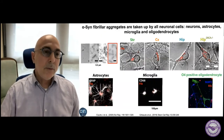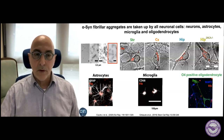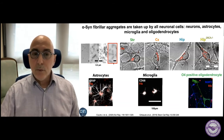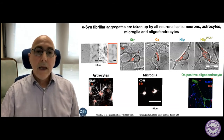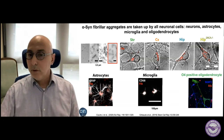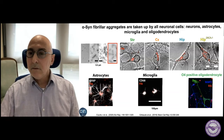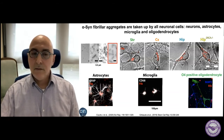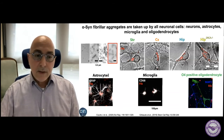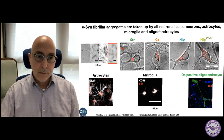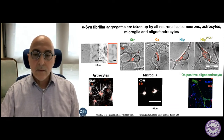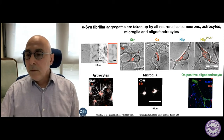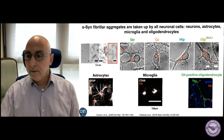We can assemble alpha-synuclein in a test tube into fibrils, visible here in the electron microscope. We can label these fibrils with a dye — red, for example — and add them to neurons grown in culture. The neurons, whether striatal, cortical, or hippocampal, expressing or not alpha-synuclein, bind these fibrils. Other cell types within our brain also bind the fibrils: astrocytes, microglial cells, and — very important for MSA — the oligodendrocytes, shown in green here.